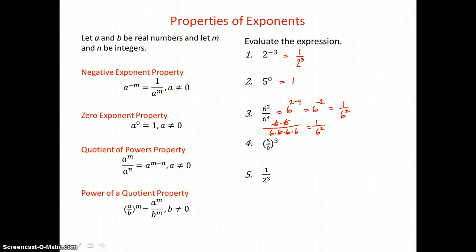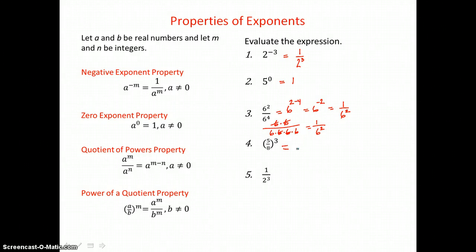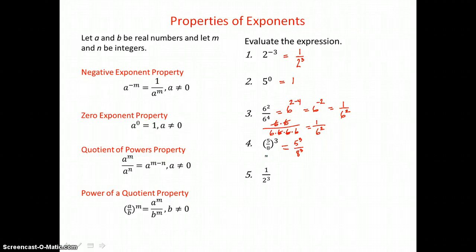In example 4, we have a quotient raised to a power. Our power of a quotient property tells us that we can raise the numerator to that power outside and the denominator to that power outside and get rid of parentheses. So we end up with 5 cubed over 8 cubed.